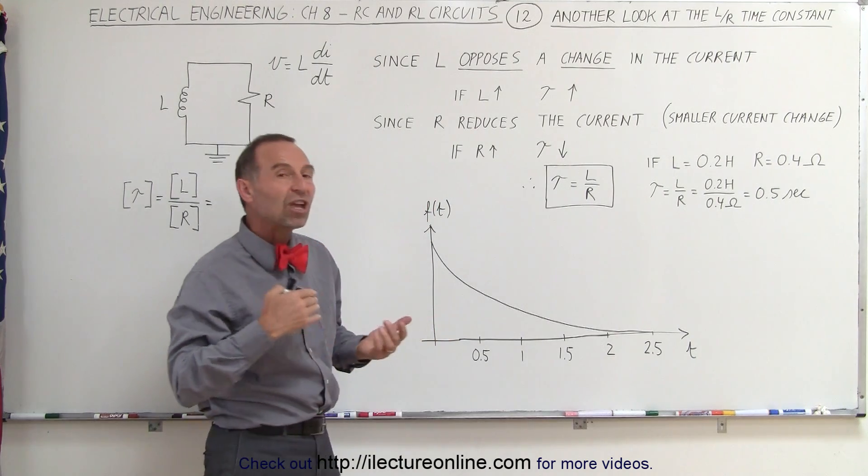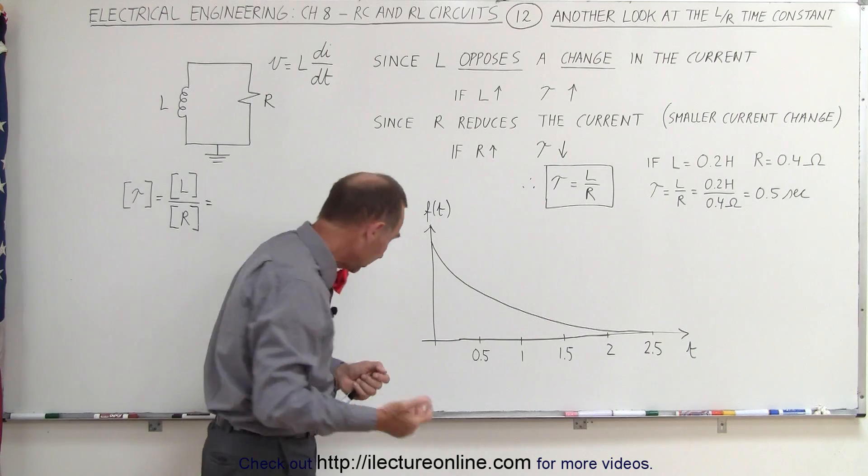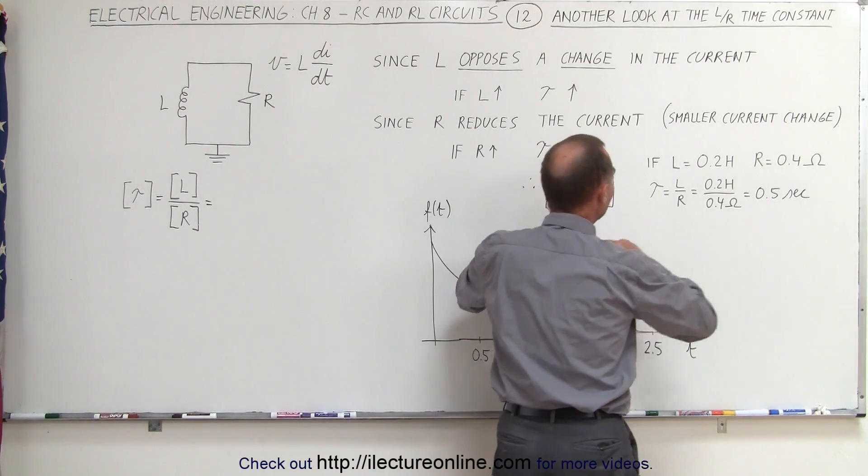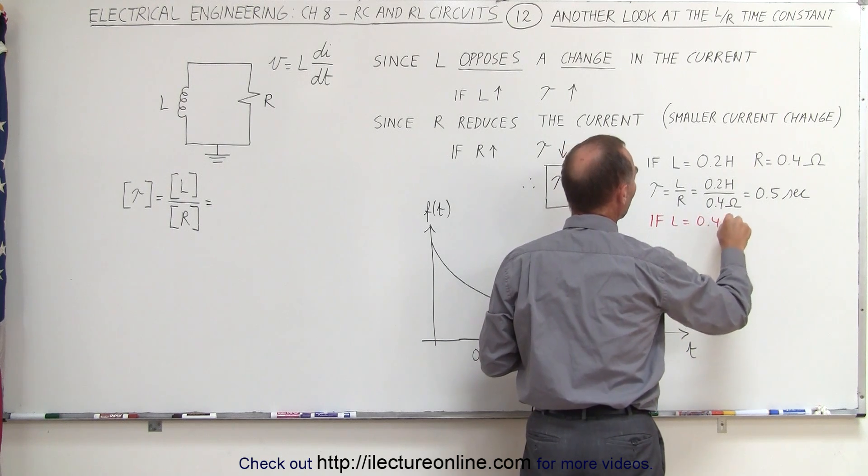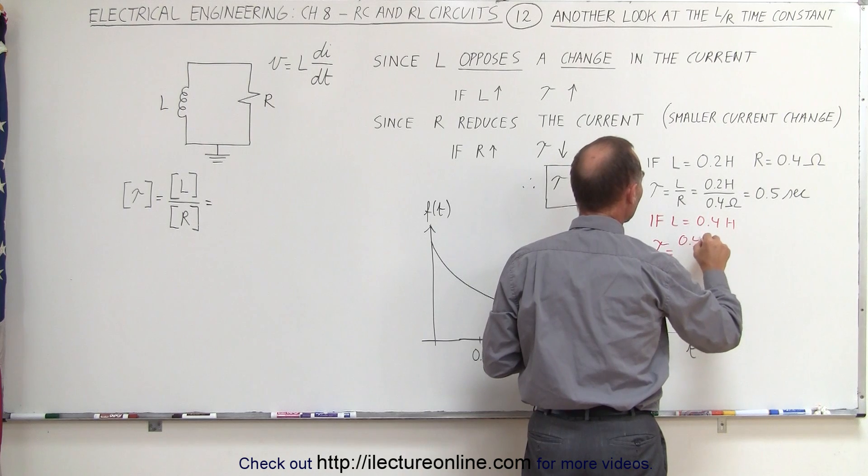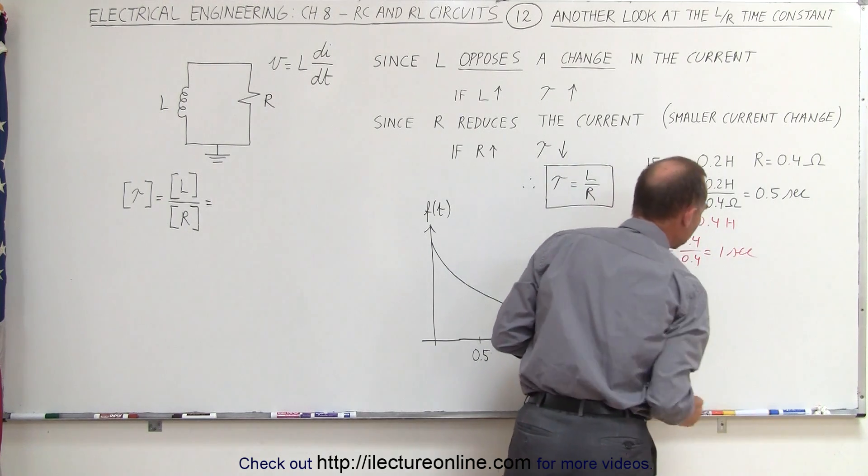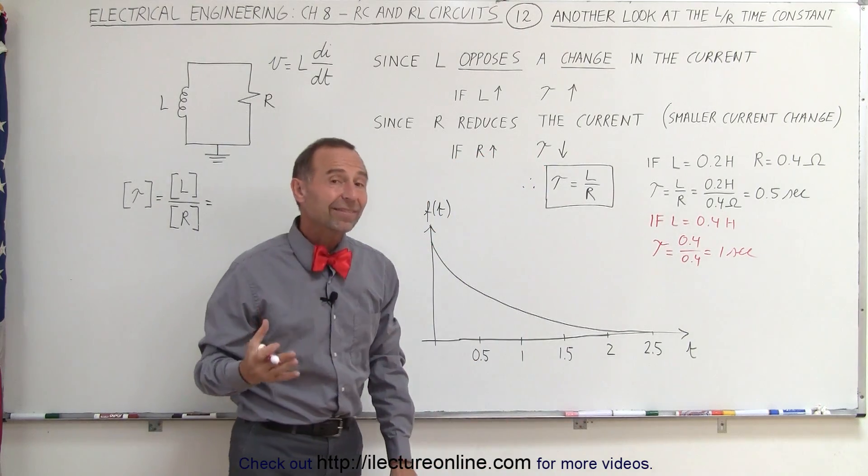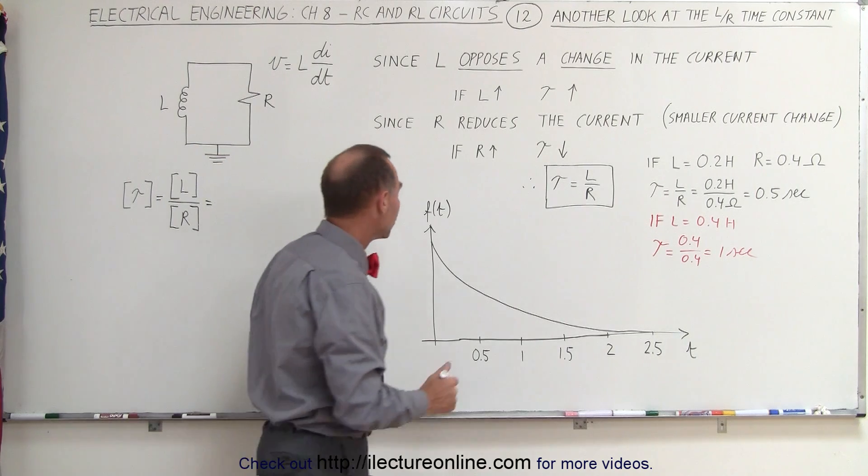Now, what happens when we change the inductance, or we change the resistance? Let's say we double the inductance. So in our second case, if L equals 0.4 Henry's, then we know that the time constant will be 0.4 divided by 0.4, which is one second. Well, if the time constant is one second, it will take five time constants, or five seconds, for its final value to be reached.